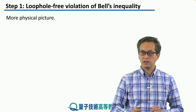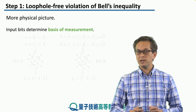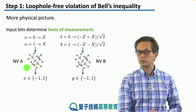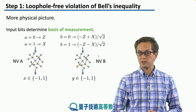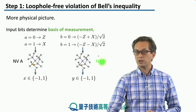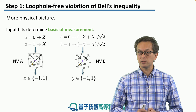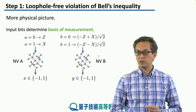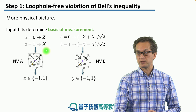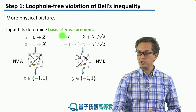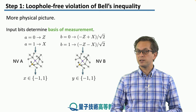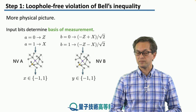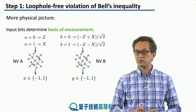That was the abstract picture. Let's get a little bit more physical. We can replace our boxes with qubits. We replace box A with a qubit — specifically the electron spin qubit of a nitrogen vacancy center in diamond — and the same for box B. Now our inputs determine the basis of measurement. When A is zero, we measure the first qubit in the z basis; when it's one, we measure in the x basis. For qubit B, when input B is zero, we measure in the rotated basis minus z plus x, and when input B is one, we measure in the basis minus z minus x. The qubits will produce plus or minus one as their answers.